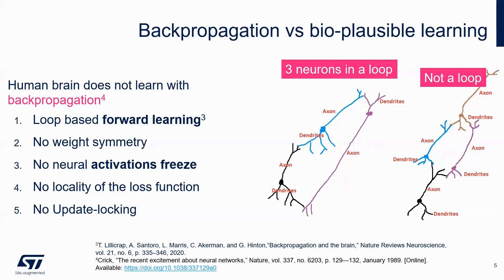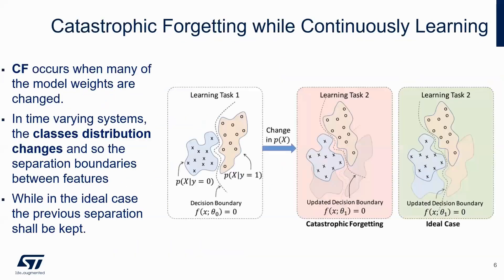Backpropagation is not plausible from a biological point of view, because the way the human brain learns is not well known, but essentially is based on loops. There is no weight symmetry like in backpropagation, no freeze of activities, no locality of the loss function, and no update locking as far as the model weights are concerned. So we need to investigate more modern methods that achieve forward learning and leave behind backpropagation.